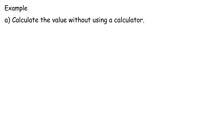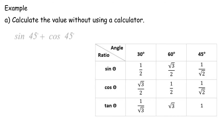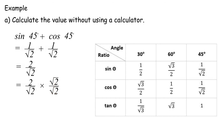Example A: Calculate the value without using a calculator. Sin 45° plus cos 45° equals 1 over √2 plus 1 over √2 equals 2 over √2. To rationalize the denominator: 2 over √2 times √2 over √2 equals 2√2 over 2, equals √2.